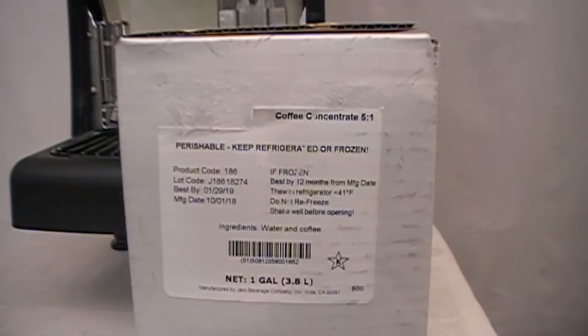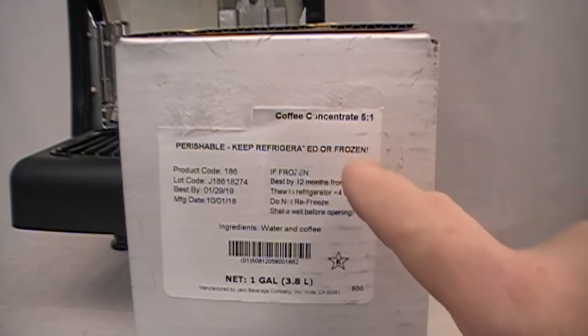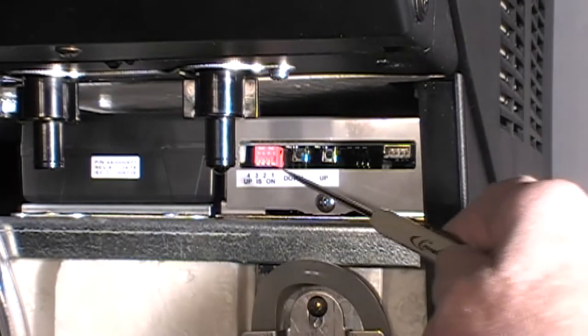To begin pouring cold brew coffee, begin by looking at the BIB packaging label to identify the mixing ratio of the concentrate to be installed. A 5 to 1 ratio is being used for this video. With the front splash panel removed, locate the block of four white dip switches.